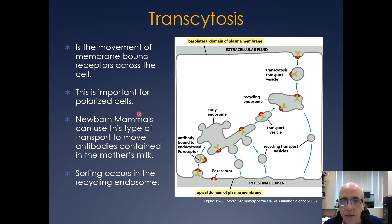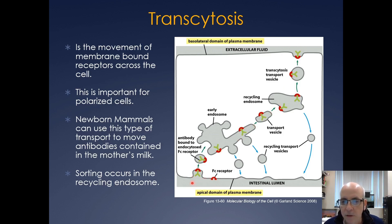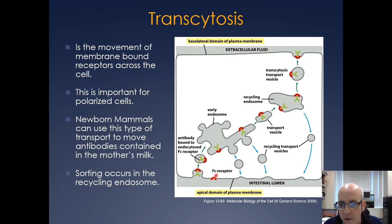You can also have this thing called transcytosis. Here you have an antibody and an FC receptor. The FC receptor will take up antibodies and basically bring them across an epithelial bilayer. So if you have epithelial cells forming a barrier where things can't freely pass, but you need to get antibodies across, you have your FC receptor that binds to the FC region — FC is short for fragment constant — of the antibody.